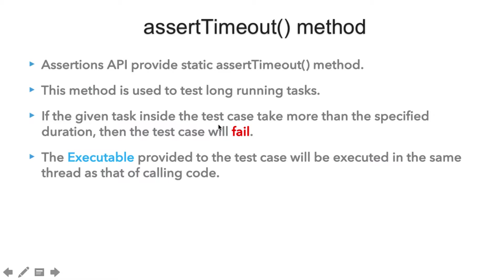The piece of code we want to execute in a test case is called an executable, which is a functional interface — a block of code that can even throw an exception. The assertTimeout method typically takes two parameters: one is the duration (the time limit), and the other is the executable functional interface, which calls the method we want to test.